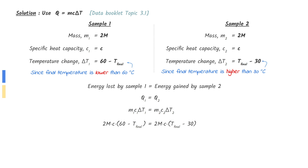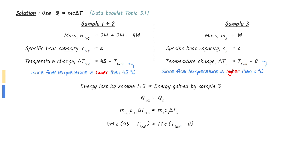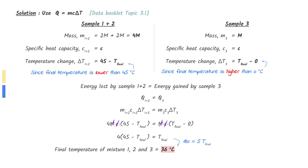Substitute in the equation and put in the values. Simplify and rearrange to find the final temperature of mixture one and two. Now repeat the same calculation for mixture one and two combined with sample three. The mass of mixture one and two is 4m and its temperature change is 45 minus the final temperature. The 45 degrees Celsius was found previously. Energy lost by samples one and two will be the energy gained by sample three. Simplify to find the final equilibrium temperature of all three samples. Note that the order in which the samples are mixed does not matter — you will end up with the same answer if done correctly.